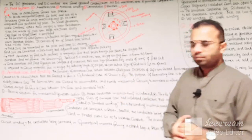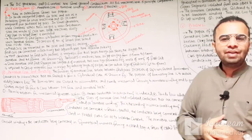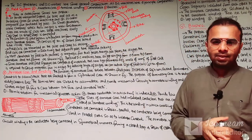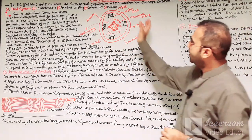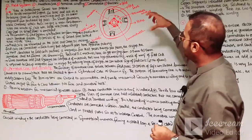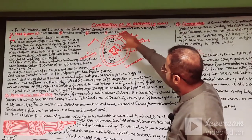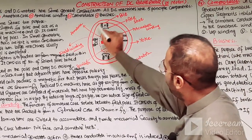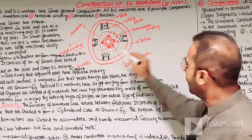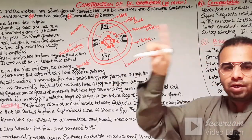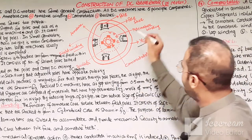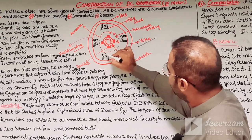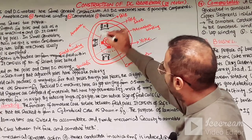Before explaining these 5 essential parts of the DC machine, first we need to understand this diagram which shows the construction of a DC machine with parts labeled at their specific positions. The outer frame of the machine is called the yoke, which is the outer cover or protecting cover of the DC machine. These are the pole shoes, as you can see, along with the north and south poles.